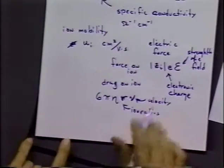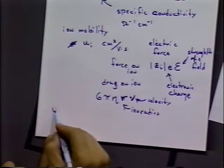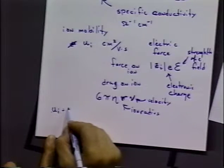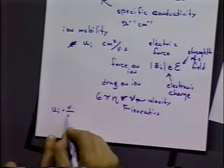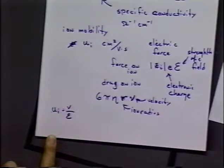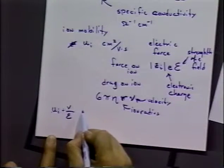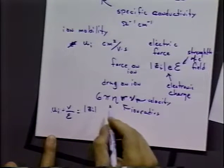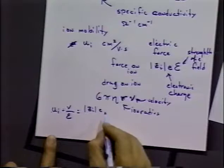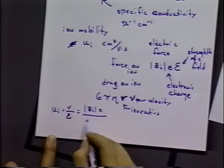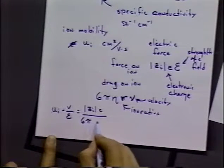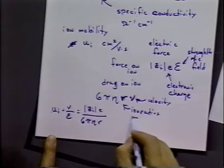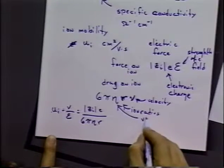So this would be the ion radius, and this would be the velocity. So the higher the velocity of the ion, the more the drag would be. And I guess we didn't define η. That's the viscosity of the solution.